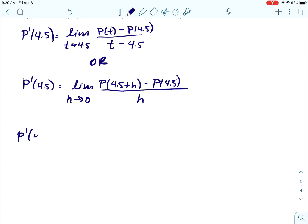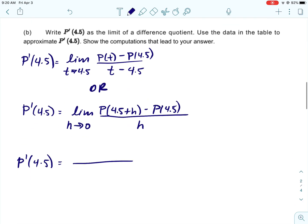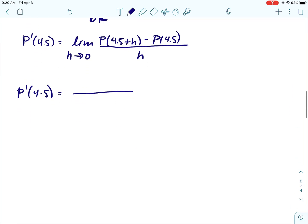Alright, the second part says to use the table to approximate p prime of 4.5. Now what we would do is the same thing we just did on a previous problem. We're going to do the average rate of change. We just need to make sure 4.5 is in between them. So typically, we're going to use the two points on each side.